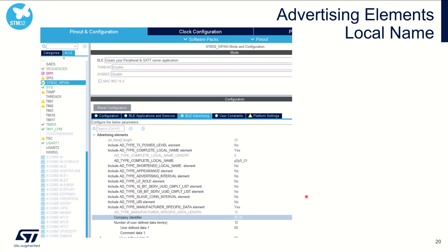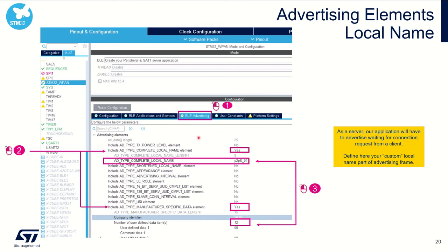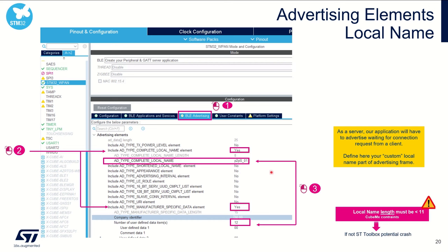After the advertising settings, let's move to the payload — what we want to advertise over the air. First, select BLE advertising. We need to say what we want to push over the air. We select the advertising type. I want to advertise local name and manufacturer data. We select yes to local name, put a local name — this will be the name broadcast over the air — and also push some manufacturer data. Please note that the local name must be a maximum of 10 bytes; this is a constraint from the tool.